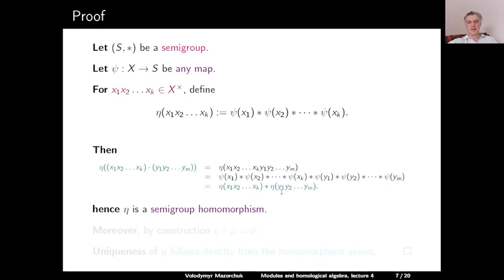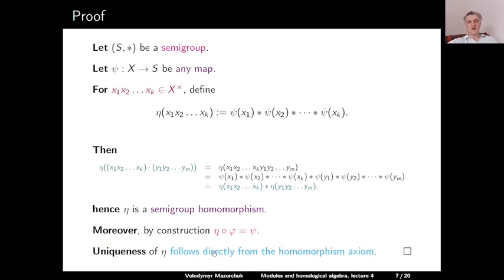Moreover, directly by construction, η after φ equals ψ: if we apply η to a letter x, we get ψ(x). Uniqueness of η follows from the homomorphism axioms: if we know the value of a homomorphism on all letters, we know it on all words, because by the homomorphism axiom they must be defined by this formula. This completes the proof.